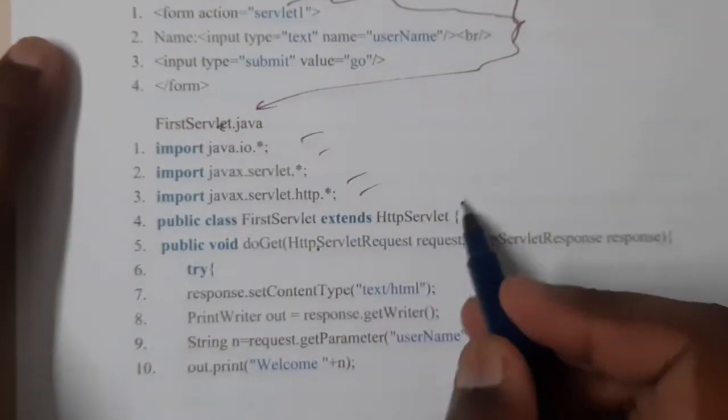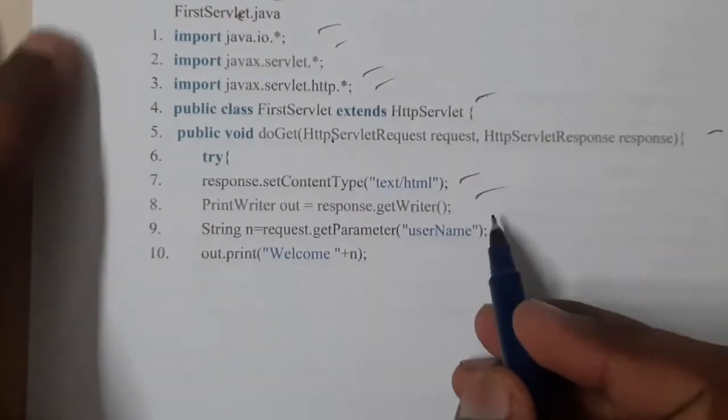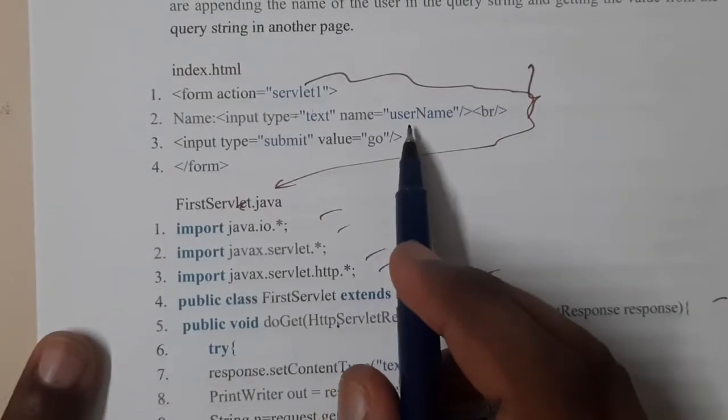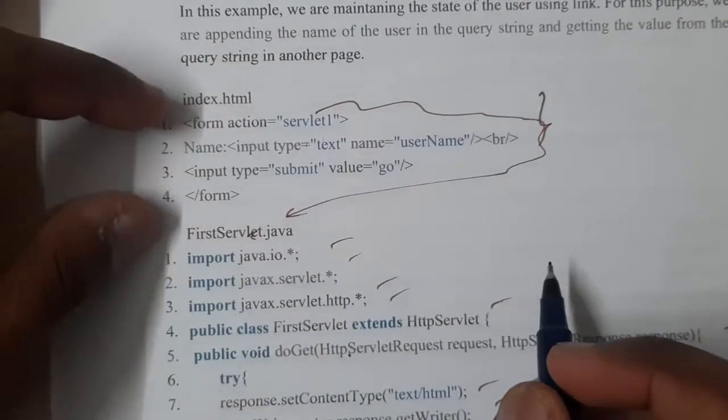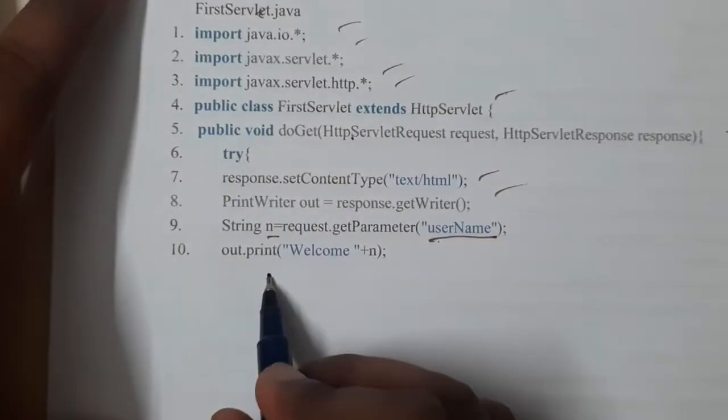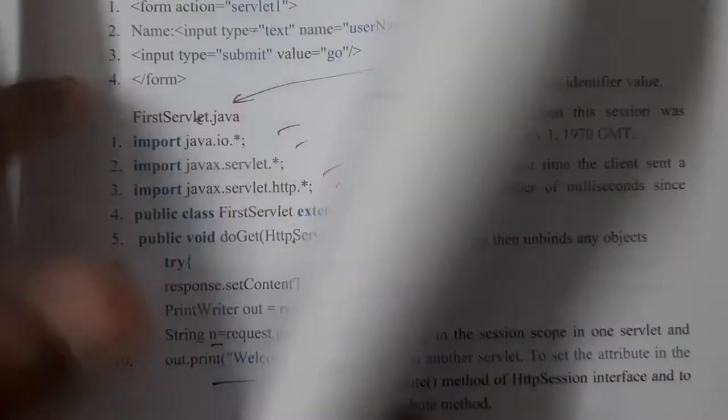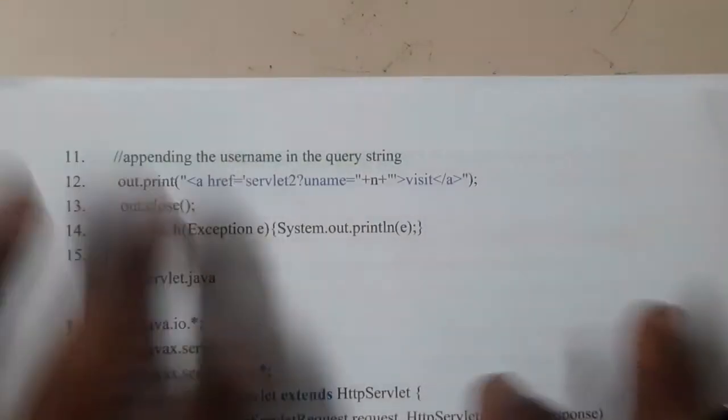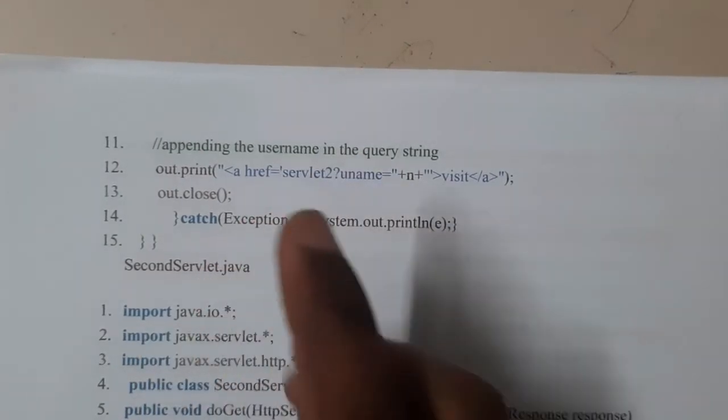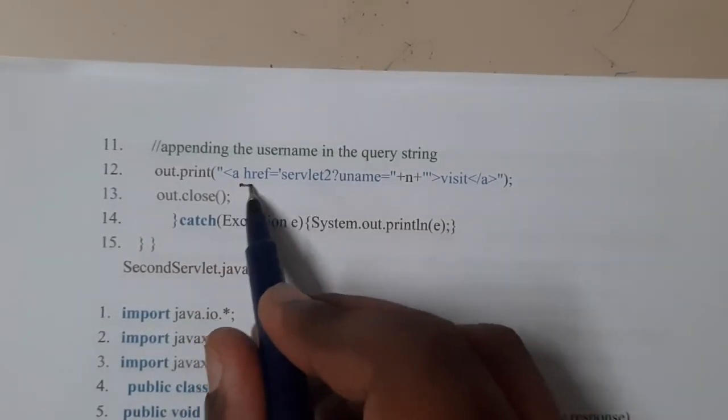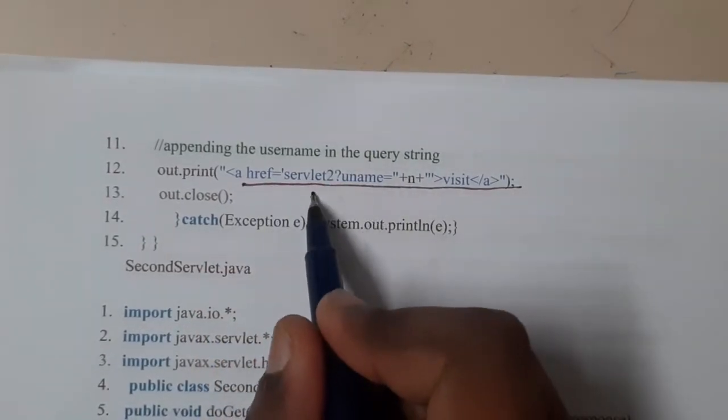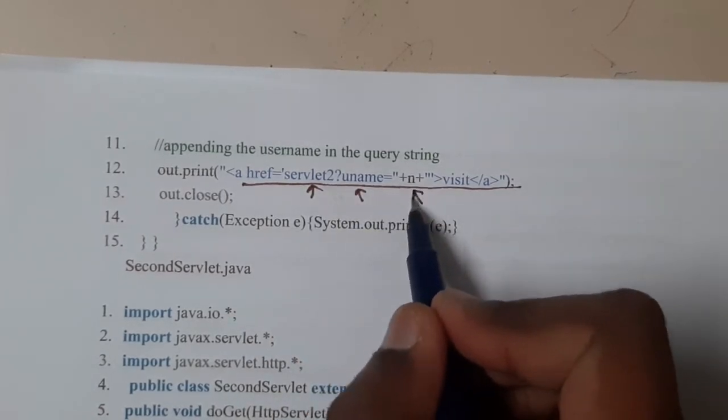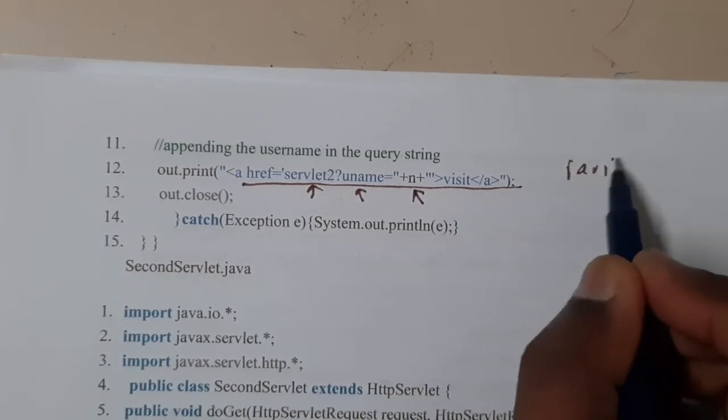Once you are collecting the username from here, getParameter username - so you collected successfully from here, you got the username to n. So you wrote welcome n. n is nothing but the name - I'm just for our easy understanding I'm calling it as n only. So output is nothing but here if you observe, here you are transmitting it to one more link. Here you are trying to call servlet two with the uname, that is nothing but username as the name which was given. Assume that the given name was Ravi, so Ravi is being passed.